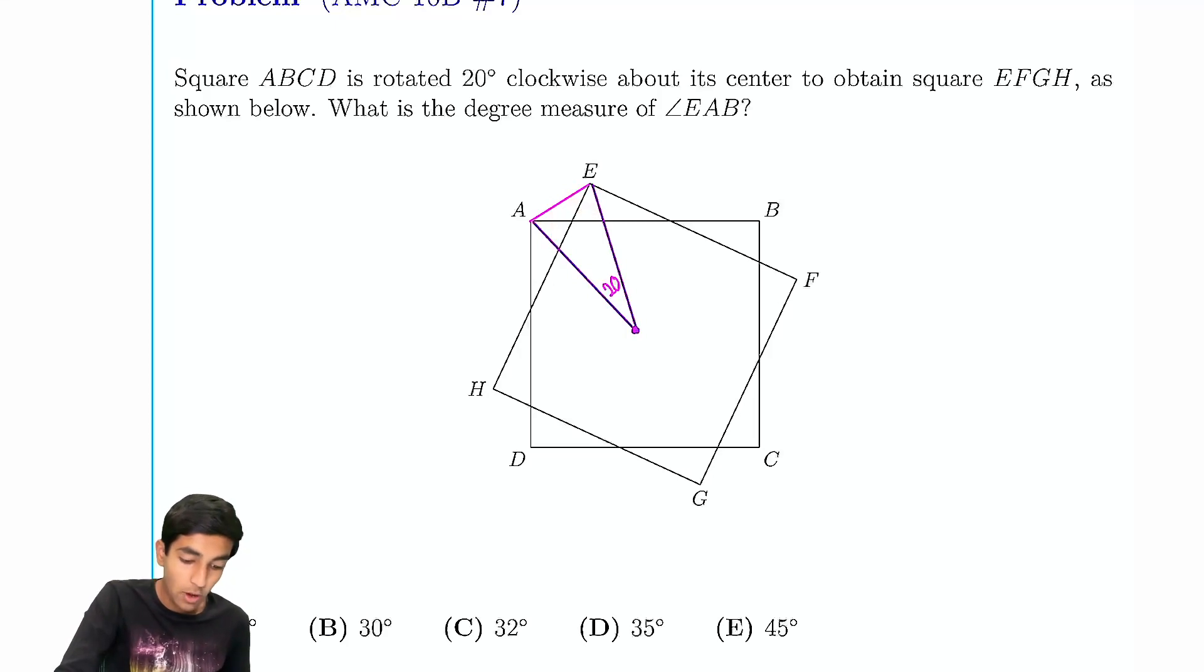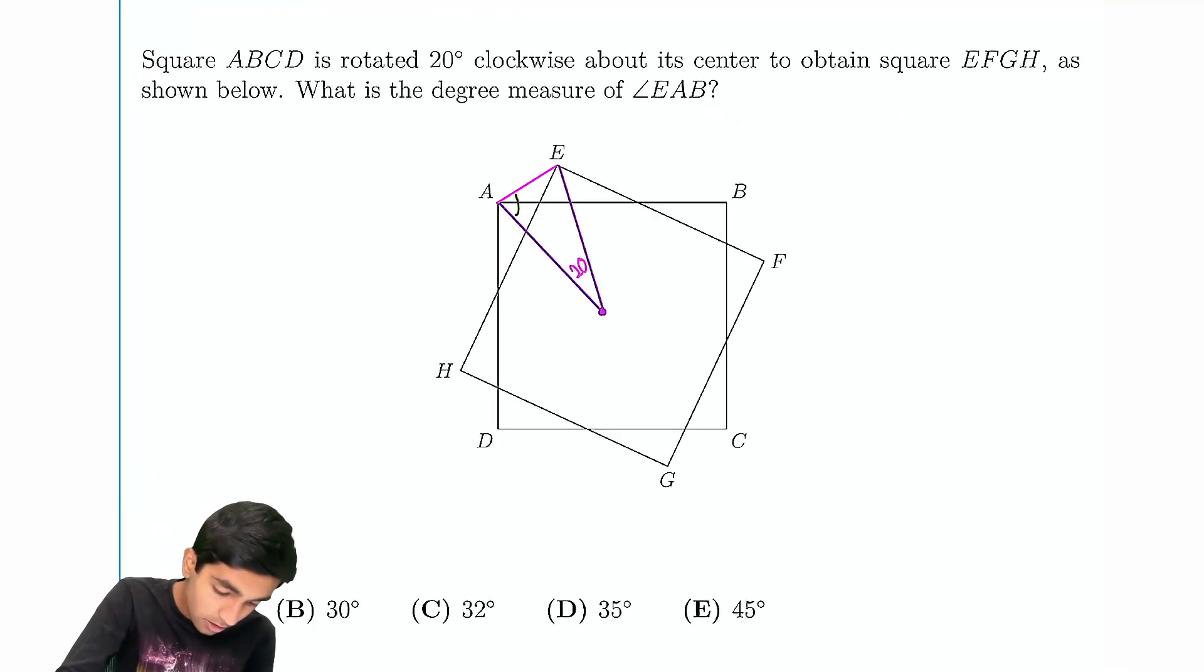And if we have two angles, let's say they're both x degrees, we have 2x plus 20 equals 180. x is going to be 80. So each of these angles are going to be 80.